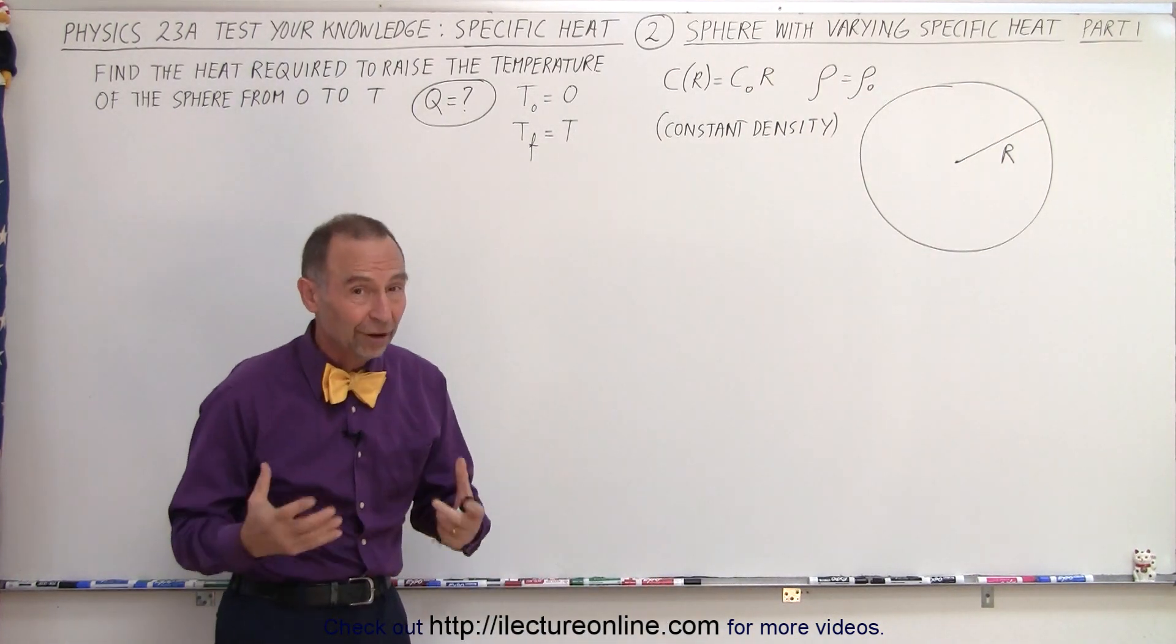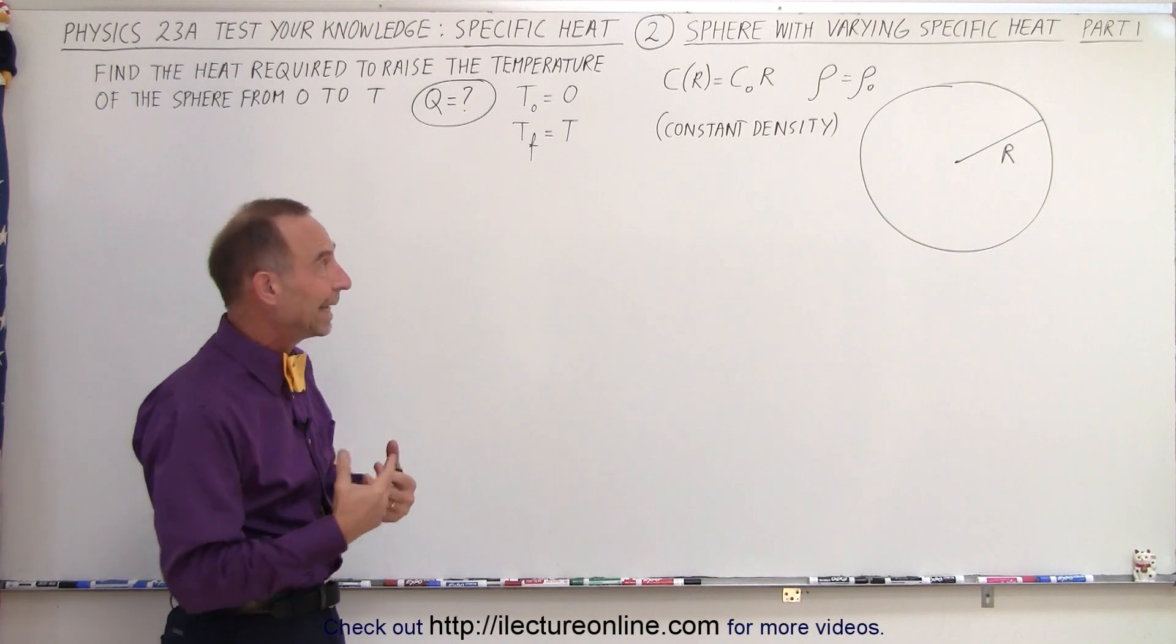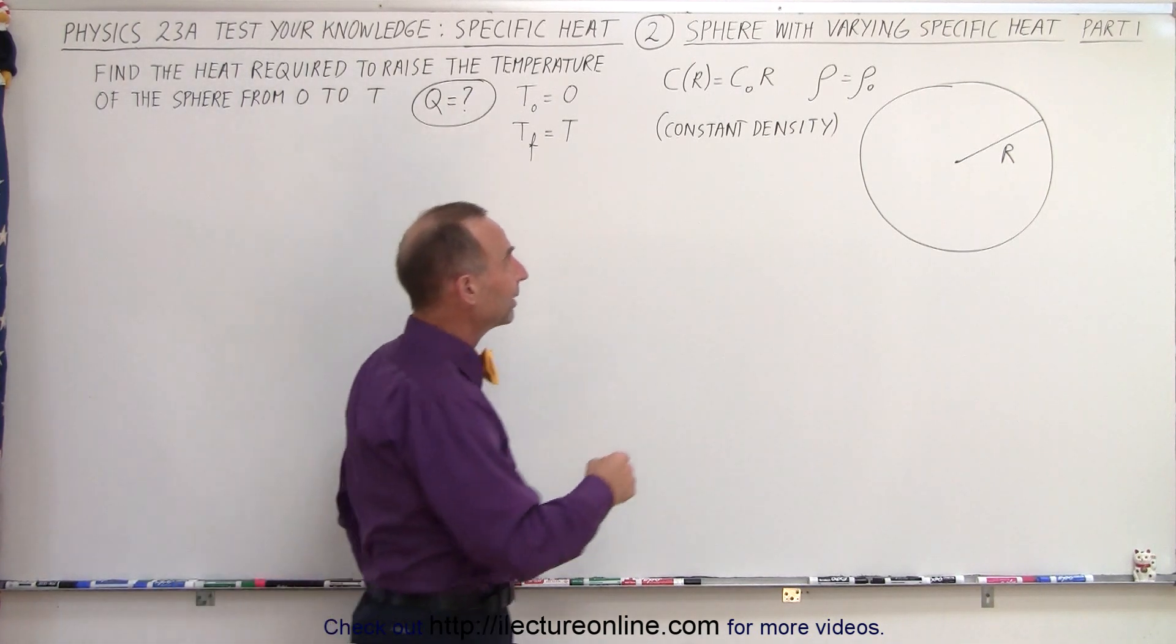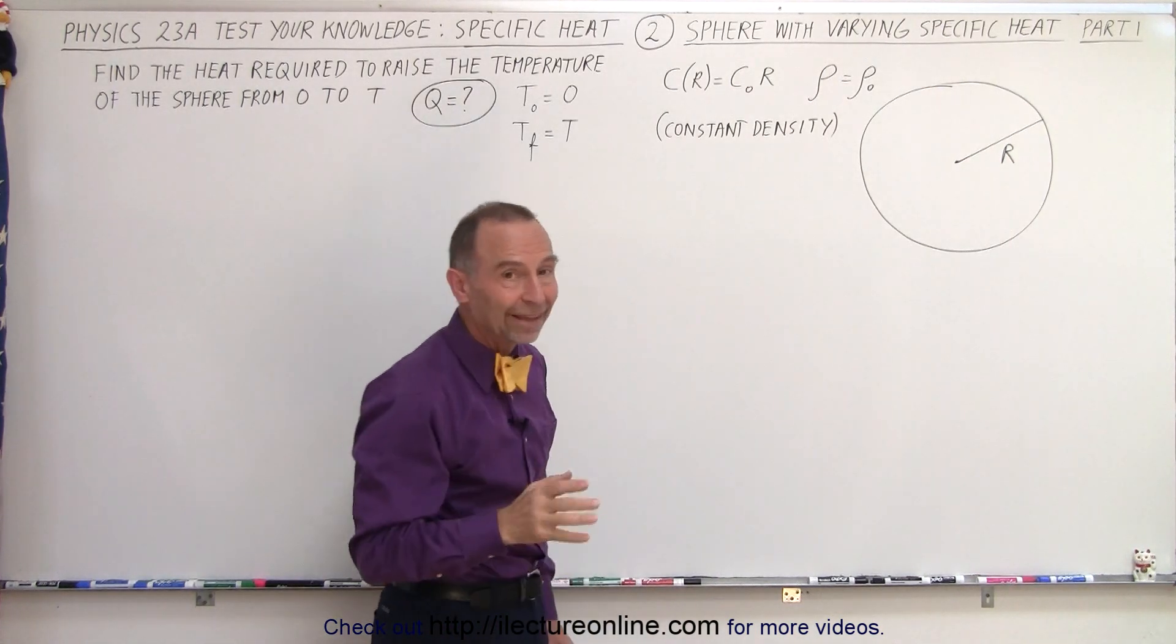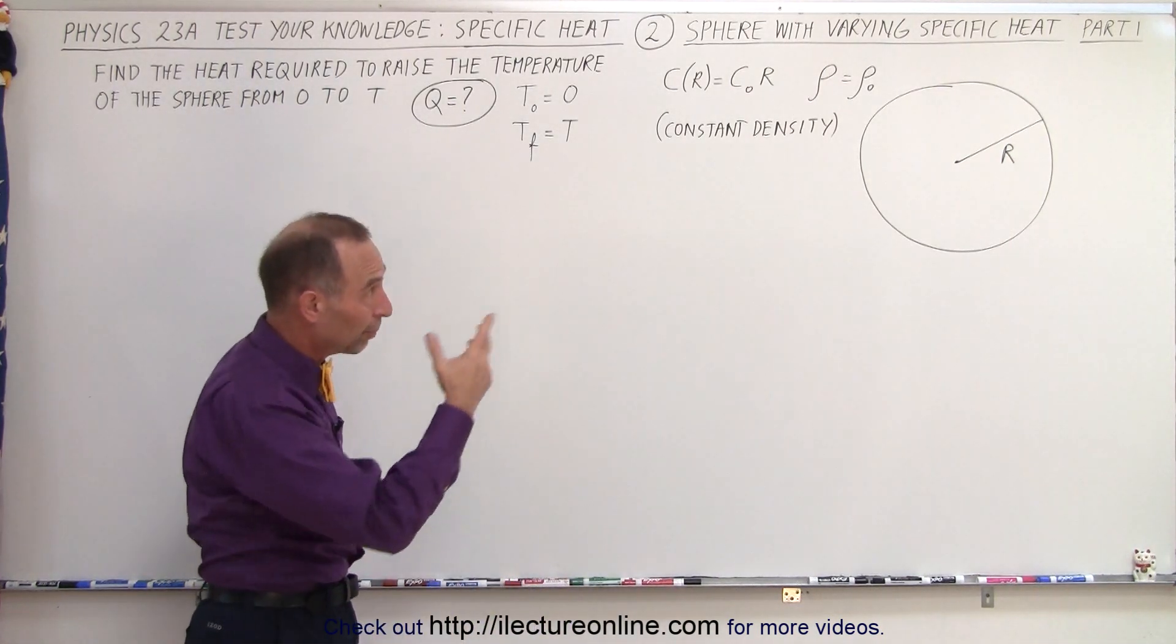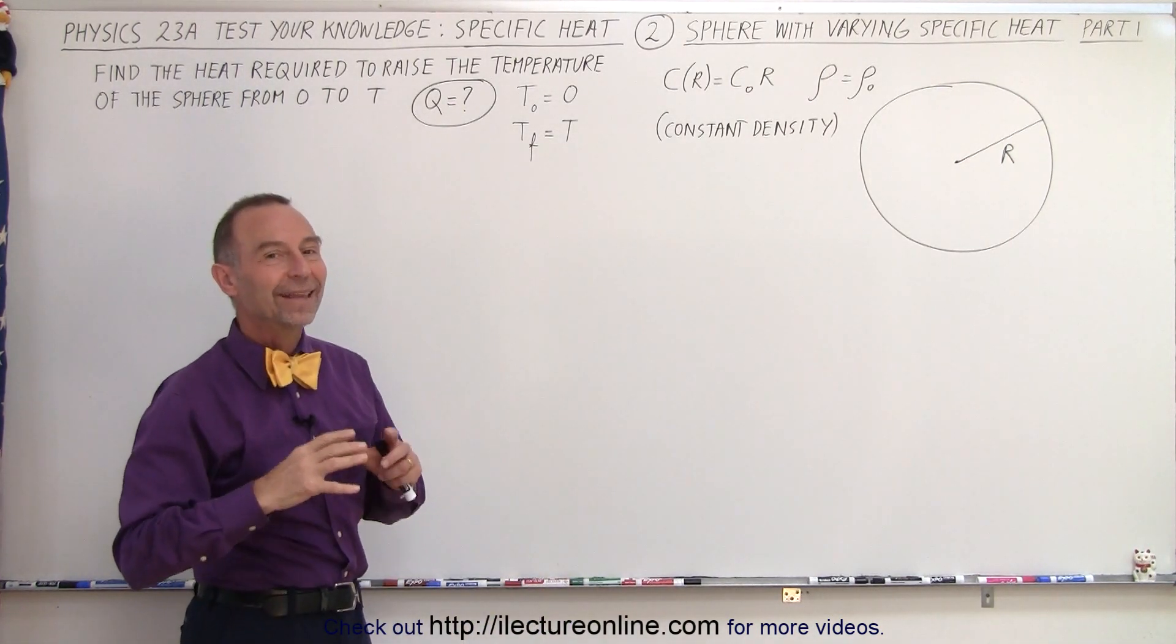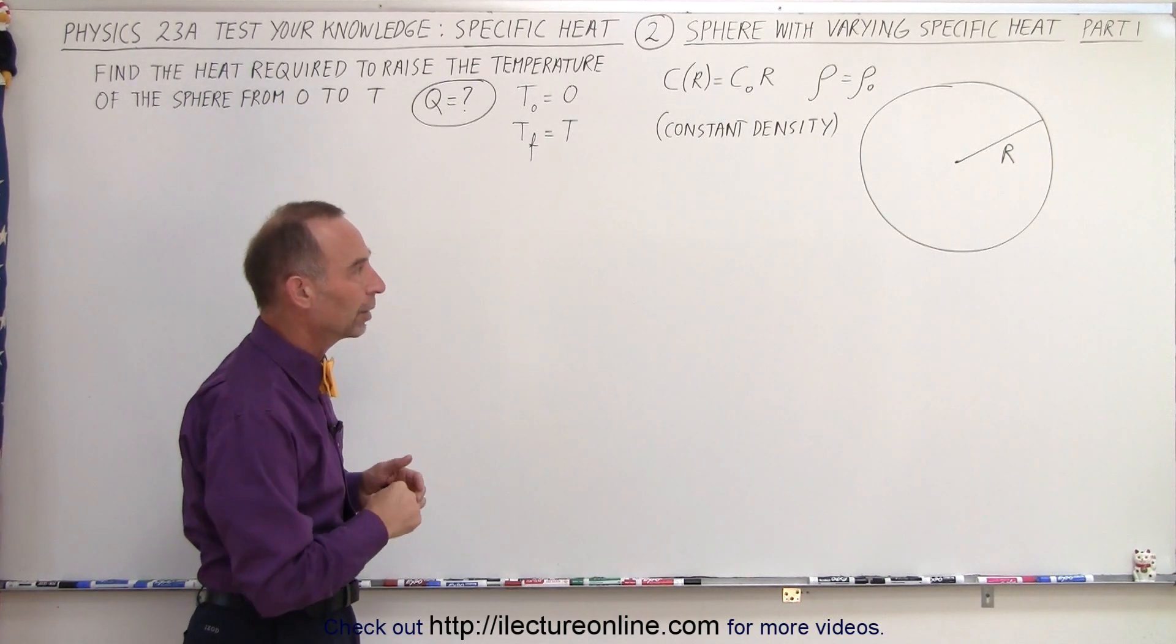So with a varying specific heat, we are going to need some sort of integral. We are told that the density is a constant, at least in this case they're leaving the constant density. In the next part, part 2, we'll also make the density vary to see how we calculate that heat required.